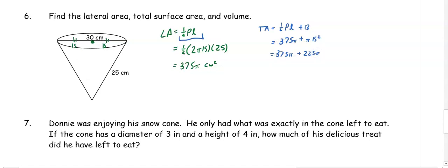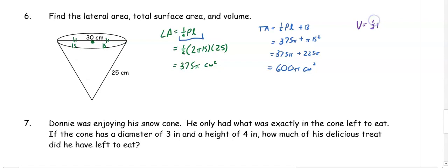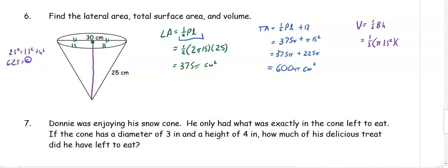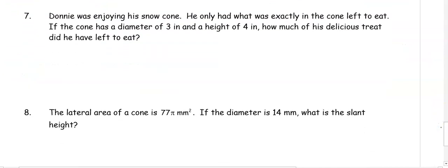When we add those together we get 600 pi centimeters squared. To get our volume, it is one third the base area times the height. We don't know the height yet, so we use the Pythagorean theorem: 25 squared equals 15 squared plus x squared. 625 equals 400 plus x squared, so 225 equals x squared and x is 15. When we multiply that we get 1125 pi centimeters cubed for the volume.